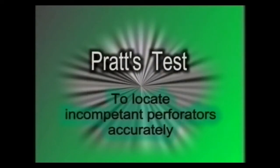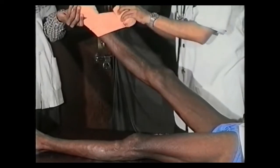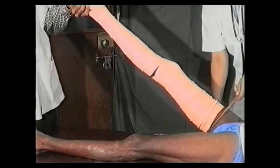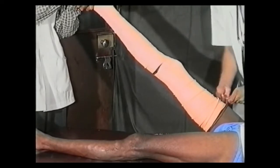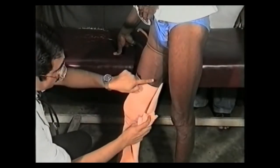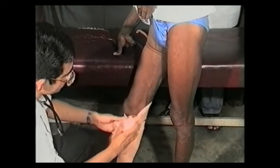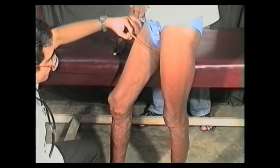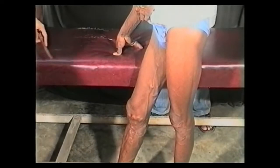Next we will perform Pratt's test. This test is performed to locate the incompetent perforators more accurately. With the patient supine, raise the leg to 30 degrees, empty the veins and apply an elastocrepe bandage from the toes to the mid-thigh with gentle pressure to occlude the superficial veins only. Apply a rubber tourniquet below the saphenofemoral valve to occlude retrograde flow. Now ask the patient to stand and release the bandage from above downwards. After releasing each turn, observe the vein for filling. The moment the turn of the bandage over an incompetent perforator is unwound, the vein will fill rapidly.